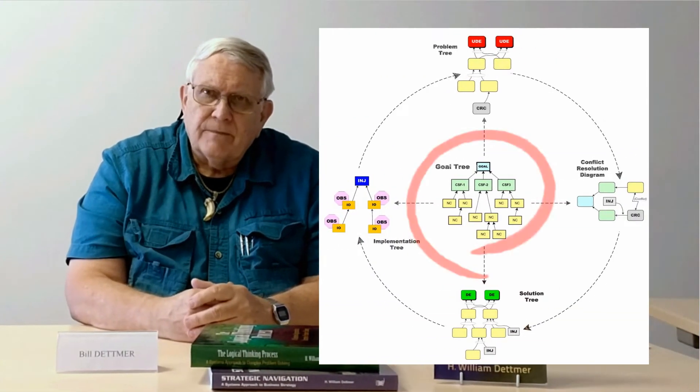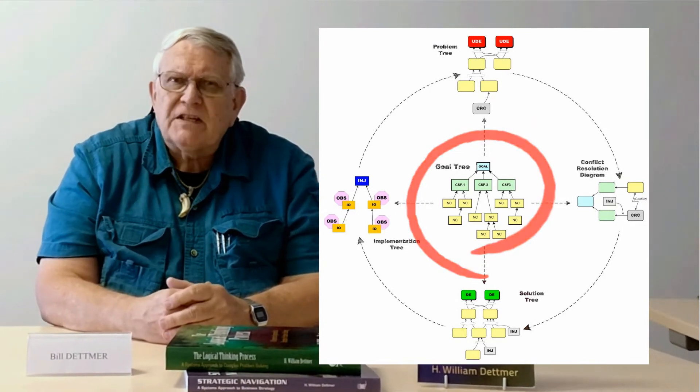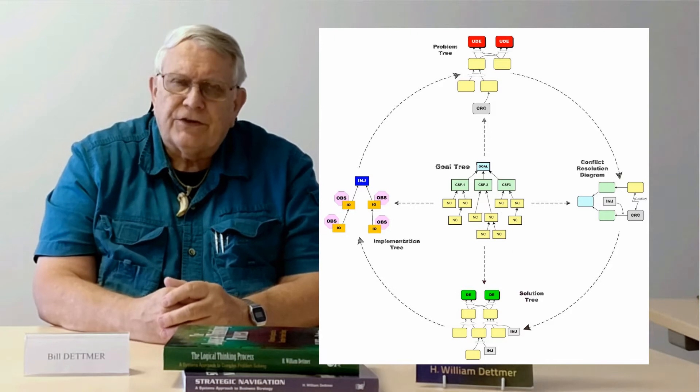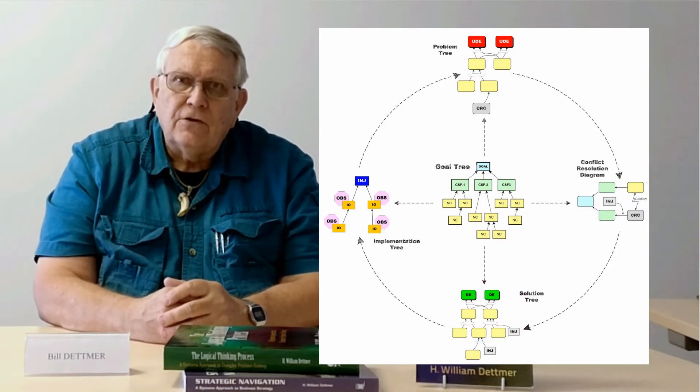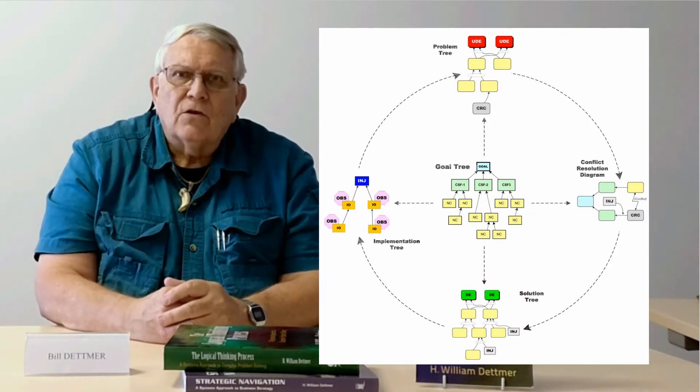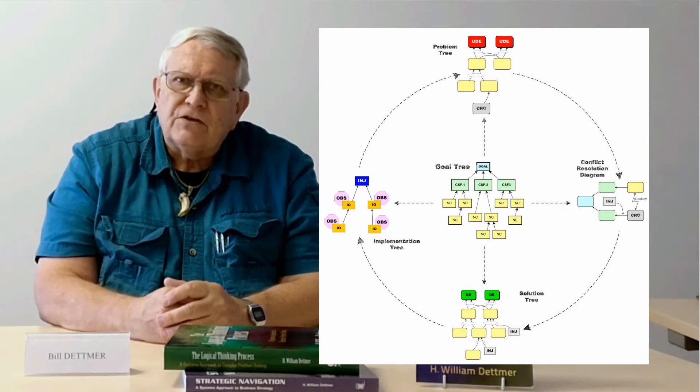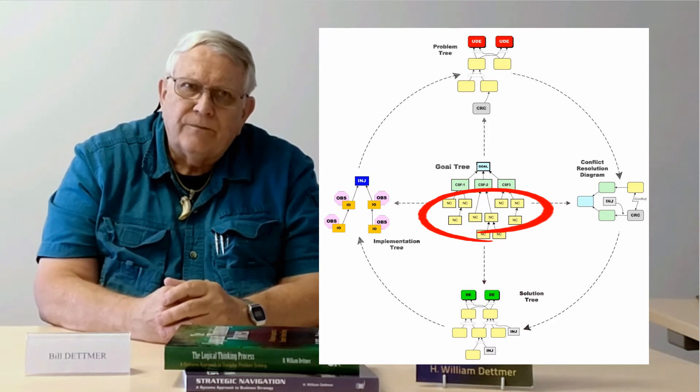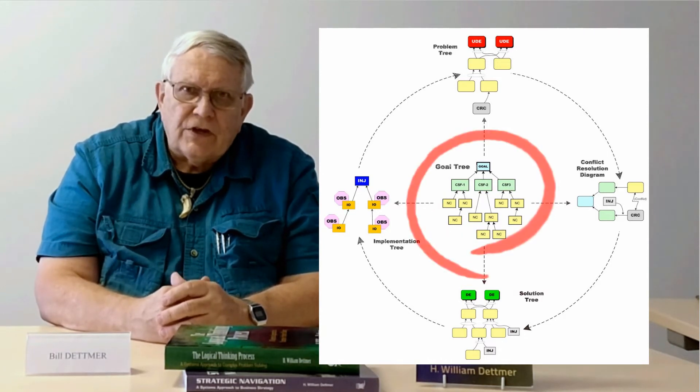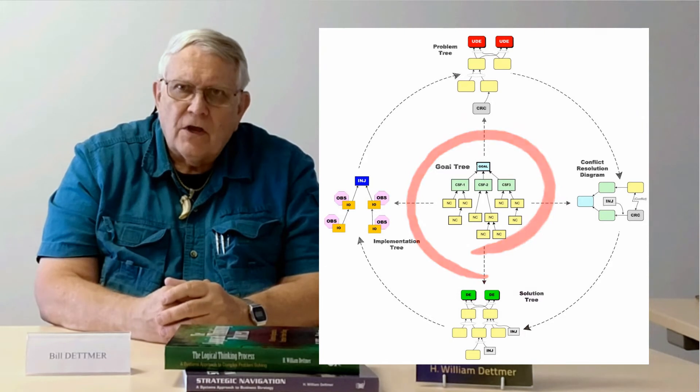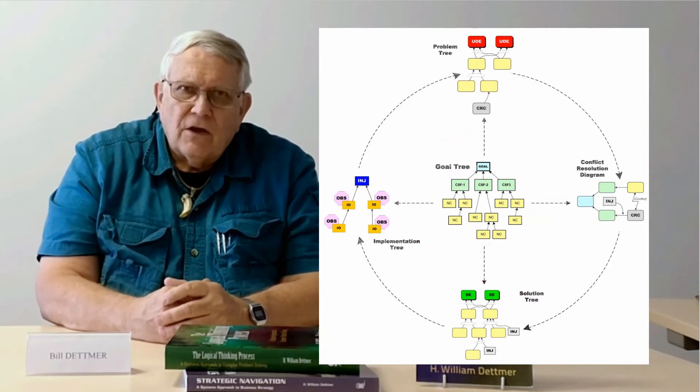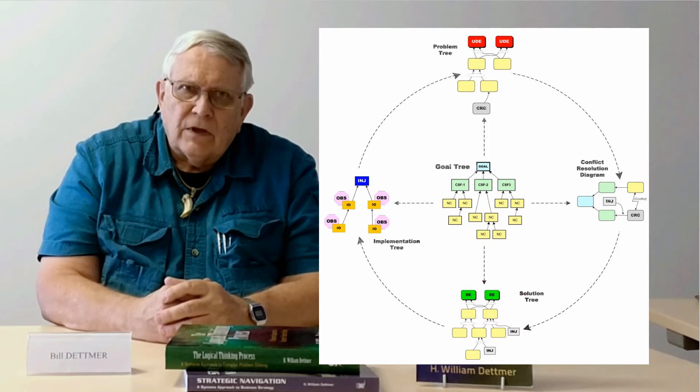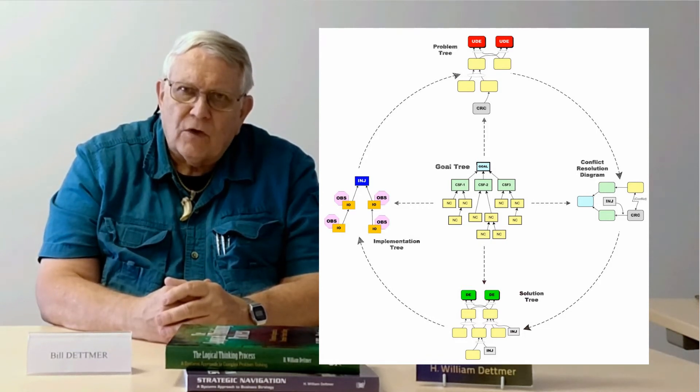The first is a goal tree. This helps people define specifically what they want their system to achieve and the critical success factors needed to do that. It also identifies all of the individual tasks required to realize the critical success factors in the goal. So the goal tree constitutes the hallmark of acceptability for all of the other trees that follow. It really is the most important step in the logical thinking process.